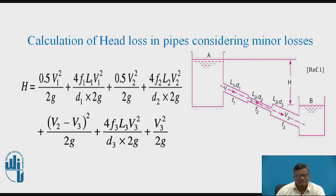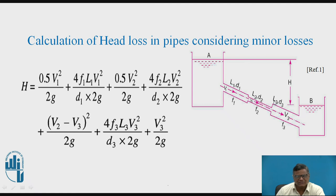Now we will go for the equation corresponding to head loss in pipes considering minor losses. Minor losses are due to change in direction, change in cross section, etc. The pipe connected to the tank gives one minor loss. Through the first pipe section we have frictional (major) loss. Then there is a sudden contraction, giving a minor loss. Frictional loss occurs in section 2. Then sudden expansion occurs, giving another minor loss. Then frictional loss in section 3. Lastly, section 3 is connected to the second tank, giving another minor loss.